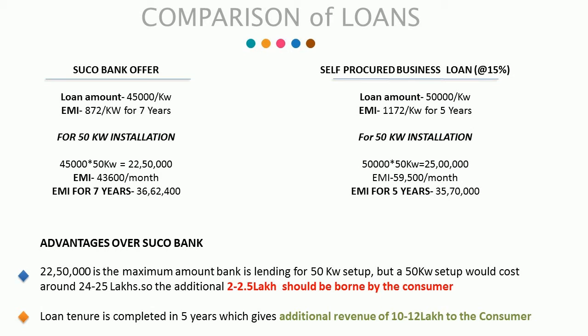Now coming to a comparison of different plans in the market. Here is a comparison of our offer with Succo Bank. The EMI paid per month is more if the loan is self-procured, but the tenure is less compared to Succo Bank, which adds an additional 6 lakh per year as revenue. That means if you install the project on your own by applying for a loan, the end user will get an additional 12 lakh as revenue.